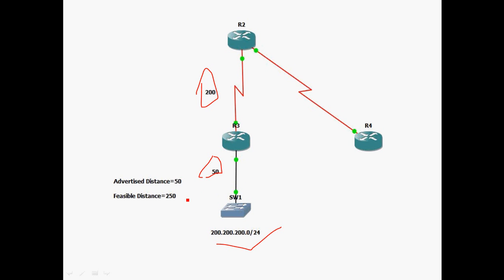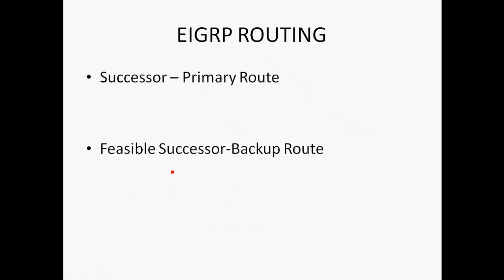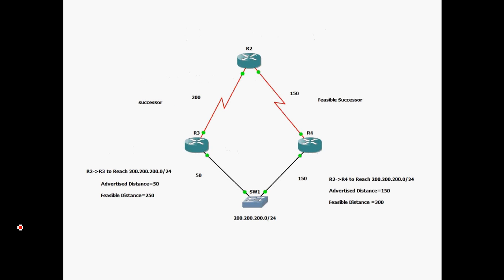A successor is the primary route, meaning the best path. A feasible successor is a backup route, meaning the second best path.